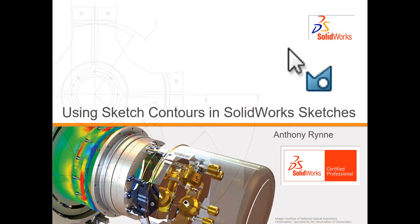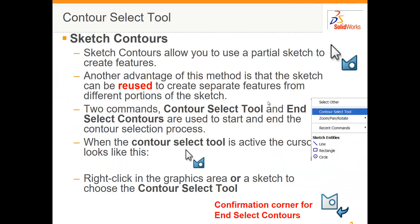In this video I'm going to look at using sketch contours in SOLIDWORKS sketches. Sketch contours are denoted by a specific symbol instead of the usual sketch symbol. Sketch contours allow you to use parts of a sketch to create features. Another advantage of using this method is that you can reuse the same sketch to create different features.